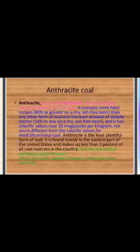Next, anthracite coal, also called hard coal. It is the most highly metamorphosed form of coal. It contains more than 86 percent fixed carbon, the least amount of volatile matter, and has calorific values near 35 megajoules per kilogram, not much different from most bituminous coal. Anthracite is the least plentiful form of coal and is found mostly in the eastern part of the United States.